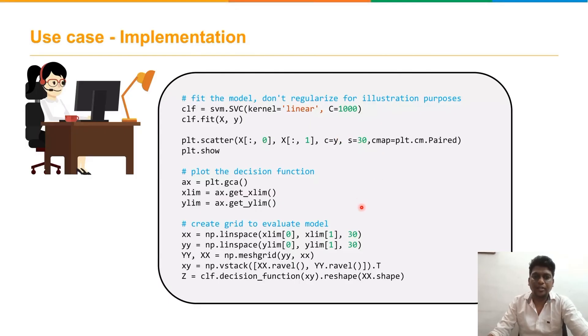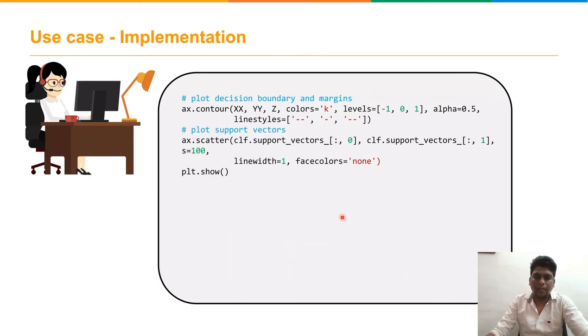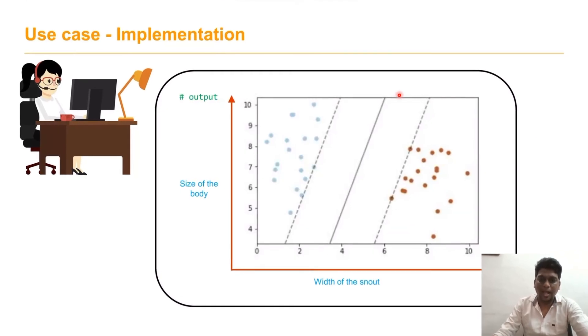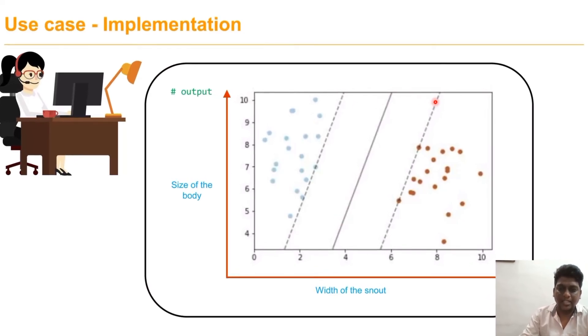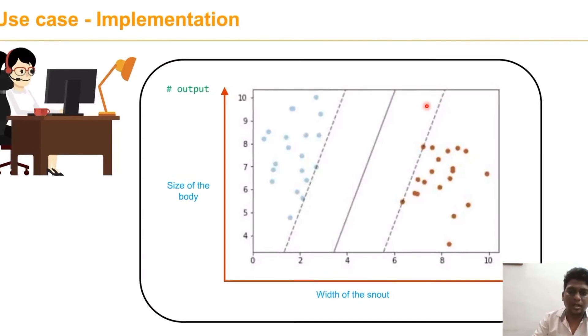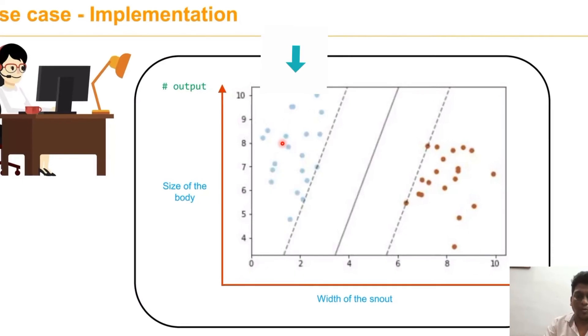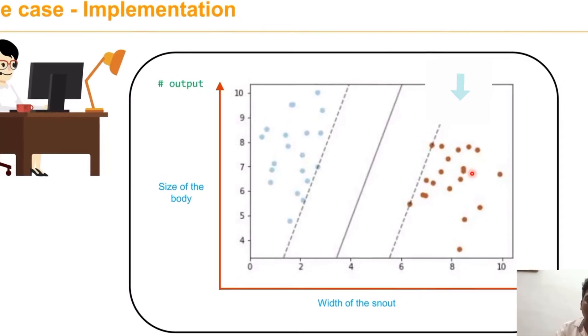This is the width of the snout and the size of the body. We have to fit the model where it has to belong, then plot the decision function. To evaluate the model, we create a grid, then plot the decision boundary and margins, and finally plot the support vectors. Now the optimal hyperplane is found, and we can get the maximum distance margin. These are all blue dots and these are all brown dots.